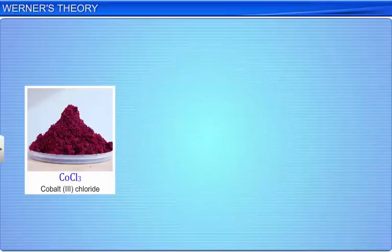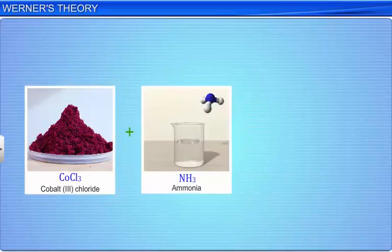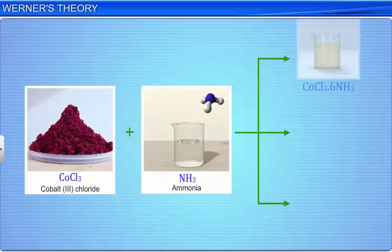Have you ever wondered why a stable salt, such as cobalt trichloride, combines with a group of stable, independently existing molecules, such as ammonia, to form new compounds like CoCl3·6NH3?